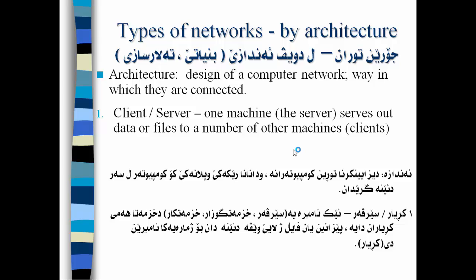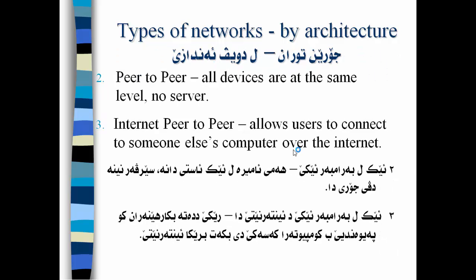Types of Networks by Architecture — the design of a computer network and the way in which devices are connected. Number one is client-server: one machine, the server, serves out data or files to a number of other machines called clients. Number two is peer-to-peer: all devices are at the same level, no server. Number three is internet peer-to-peer, which allows users to connect to someone else's computer over the internet.